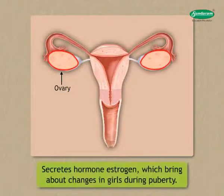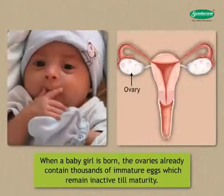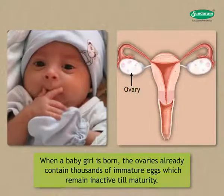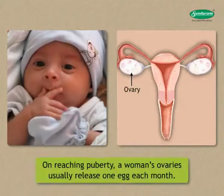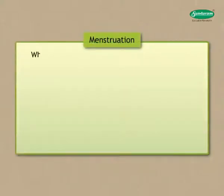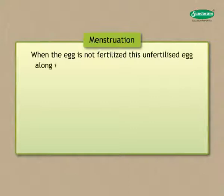The ovaries secrete the hormone estrogen, which brings about changes in girls during puberty. When a baby girl is born, the ovaries already contain thousands of immature eggs which remain inactive till maturity. On reaching puberty, a woman's ovaries usually release one egg each month.